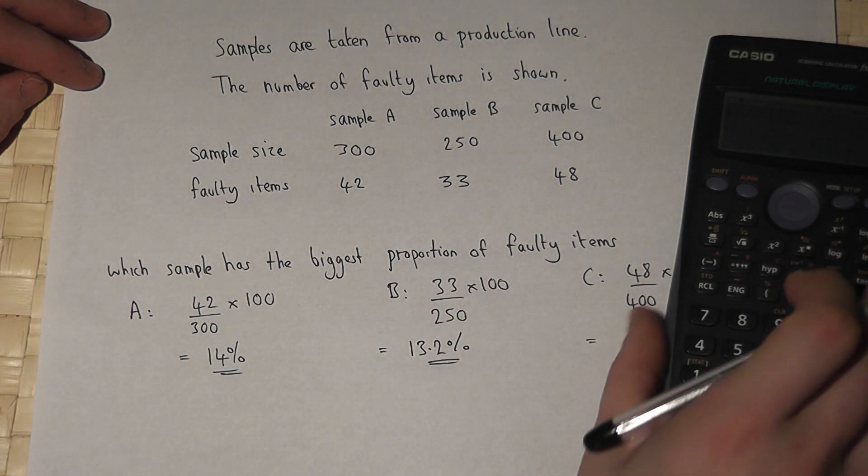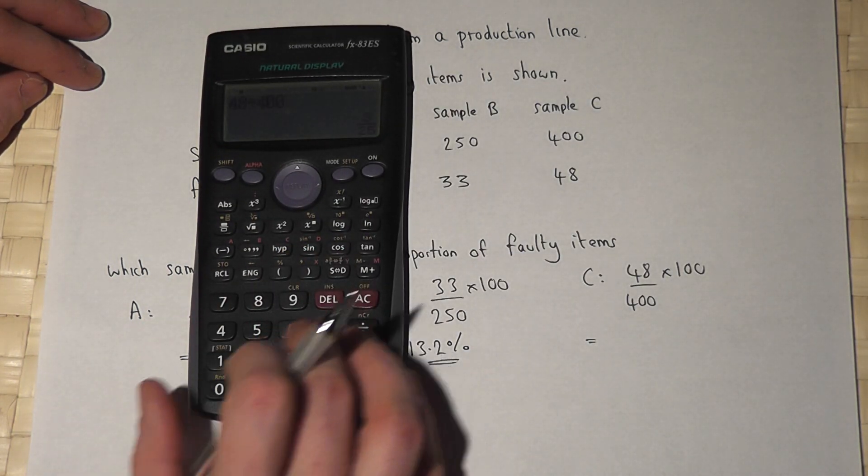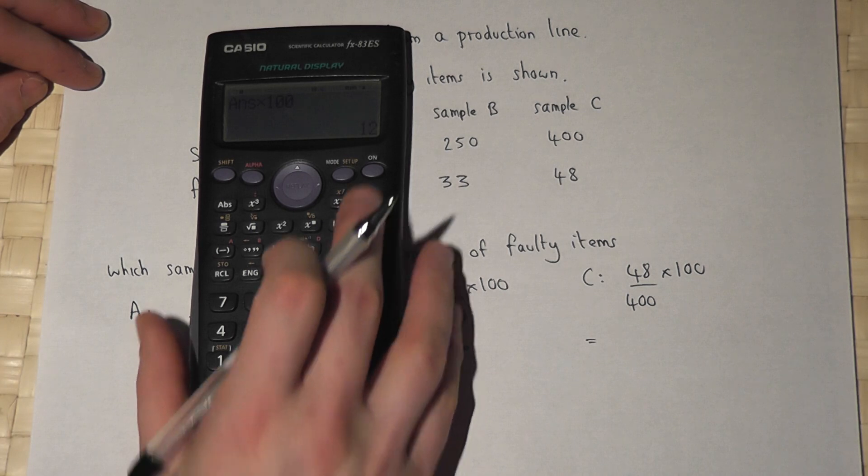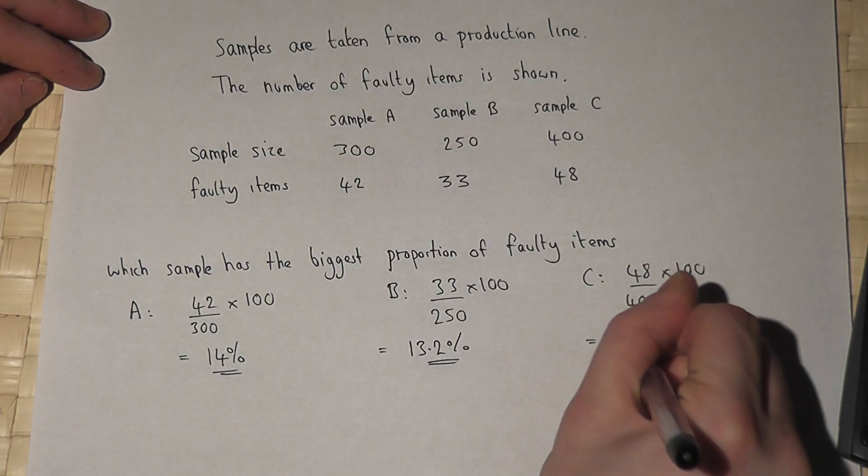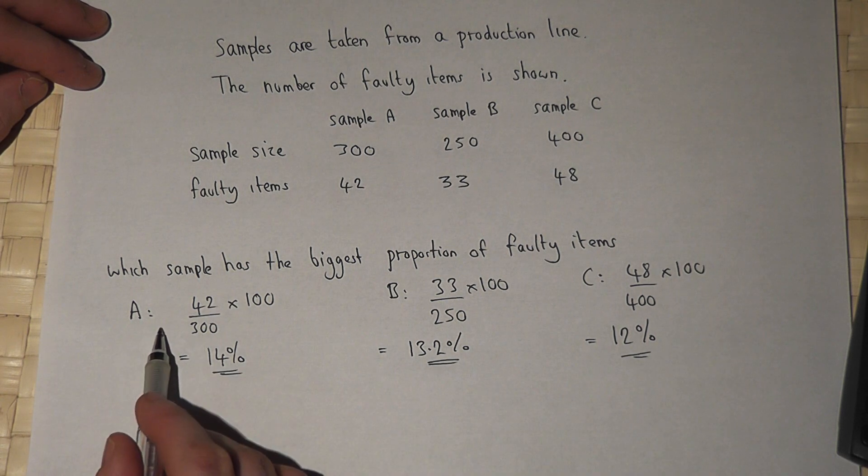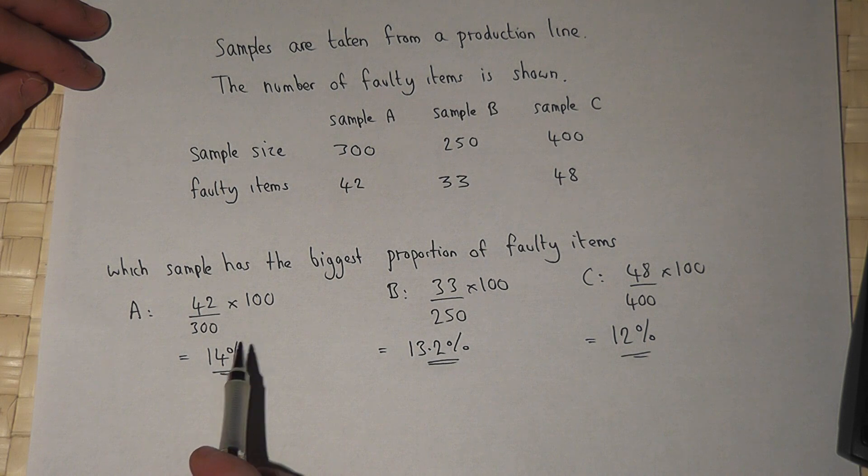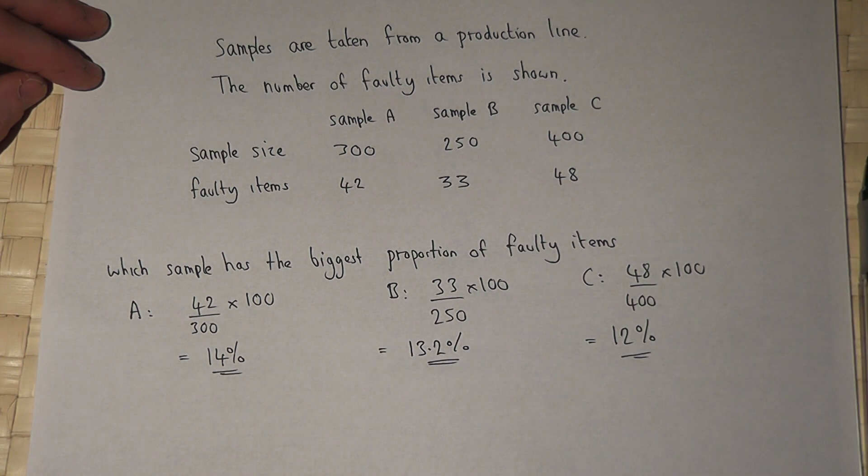In sample C, 48 divided by 400, times 100, works out to 12%. From this, it's clear that sample A has the biggest proportion of faulty items. Thank you.